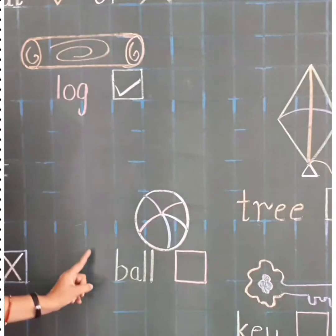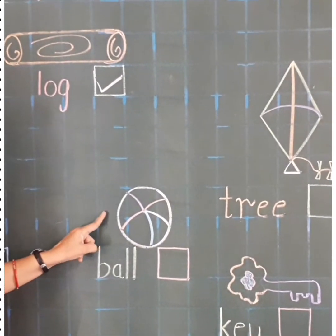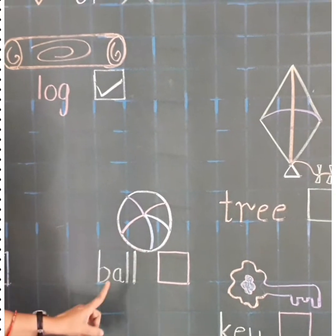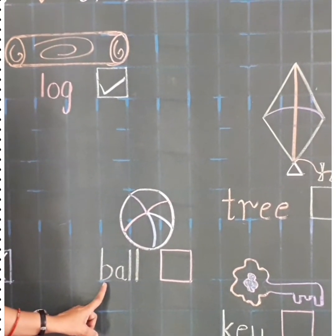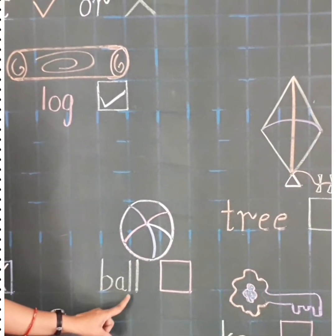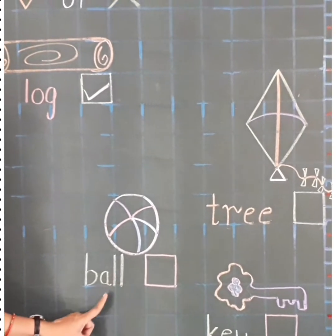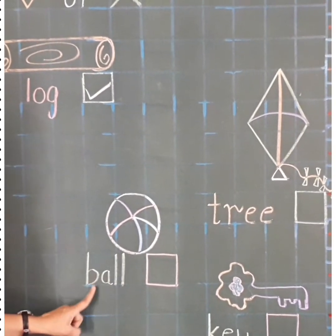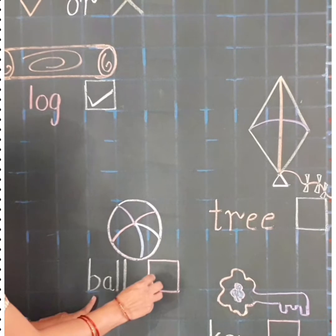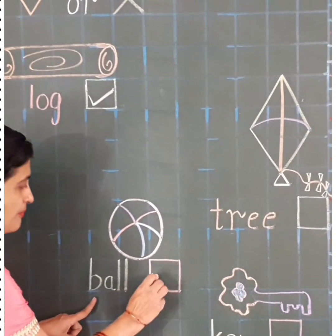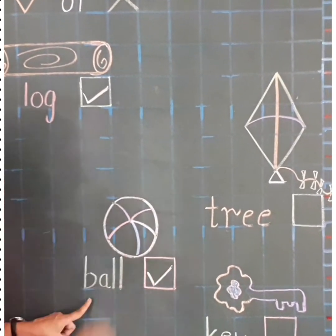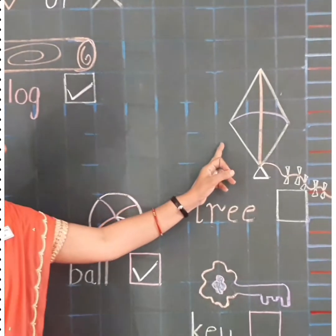Now another one. This is a ball. And what is the spelling of ball? B-A-L-L. Ball. Yes. This is the correct spelling of a ball. So what we have to do? Tick. Yes.